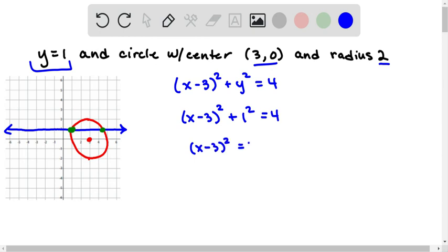So we have (x - 3)² = 3. We can square root both sides, so we have x - 3 = ±√3, and then we can add 3 to both sides, so x = 3 ± √3.